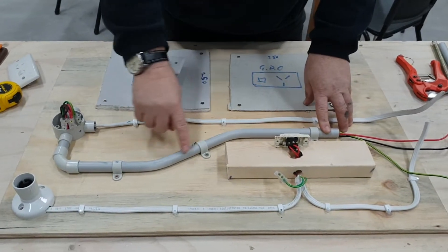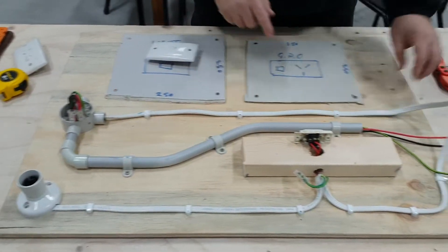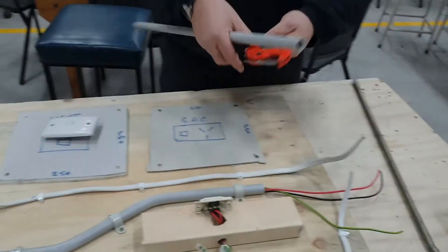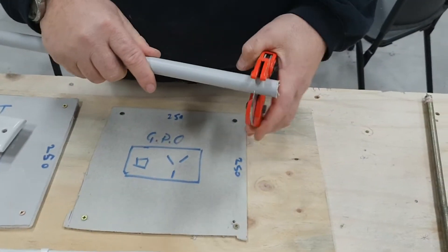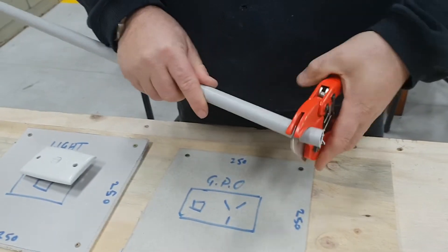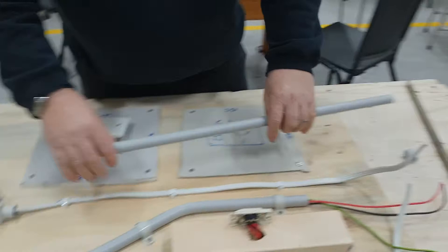Then we get our bit of conduit, which we've got in a bending spring. To cut your conduit, we have conduit cutters, which I'm going to show you later in detail. Your conduit cutters are used for cutting your conduit. That'll be used for this.